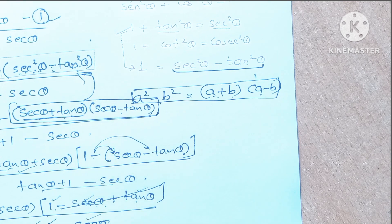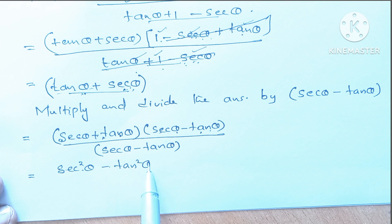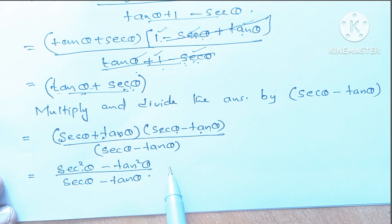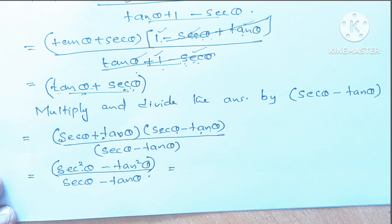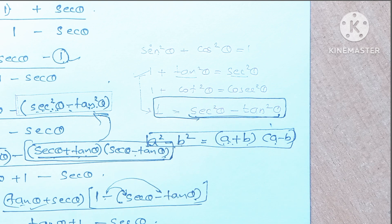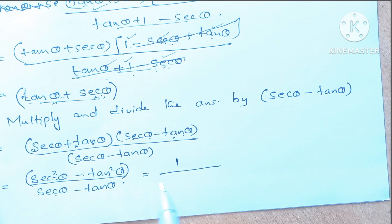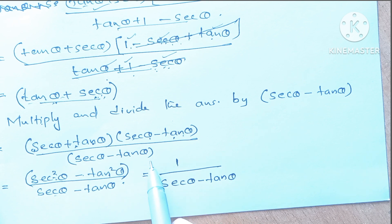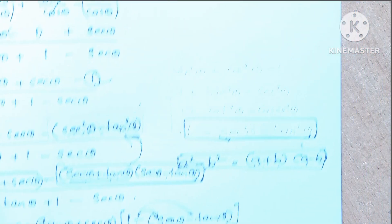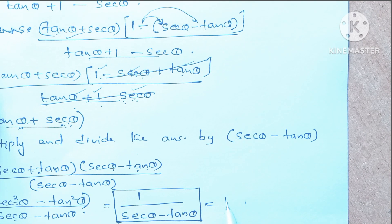So (sec θ + tan θ)(sec θ - tan θ) is in the form of (a + b)(a - b) = a² - b², which means sec²θ - tan²θ, divided by (sec θ - tan θ). We already know the identity: sec²θ - tan²θ = 1. So sec²θ - tan²θ can be replaced as 1, giving us 1 / (sec θ - tan θ), which is exactly the RHS we required.